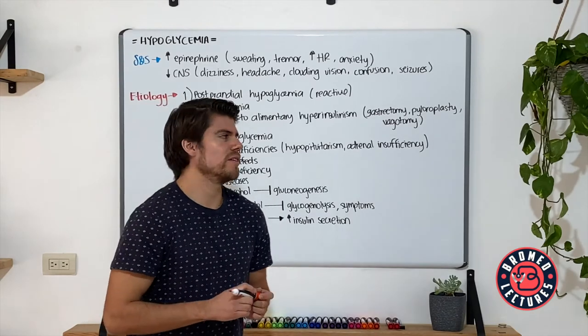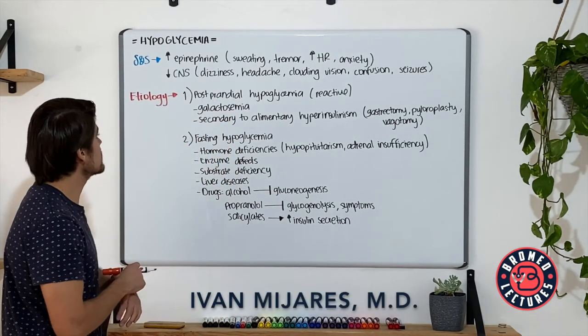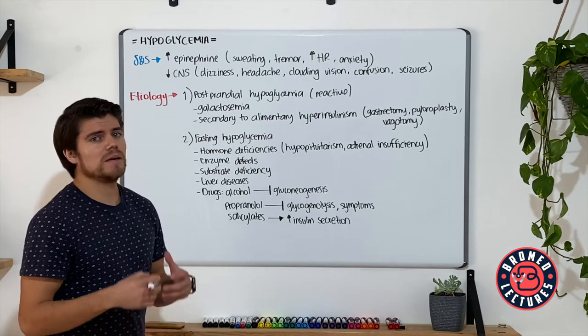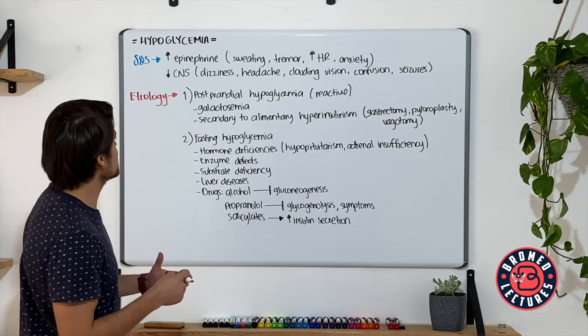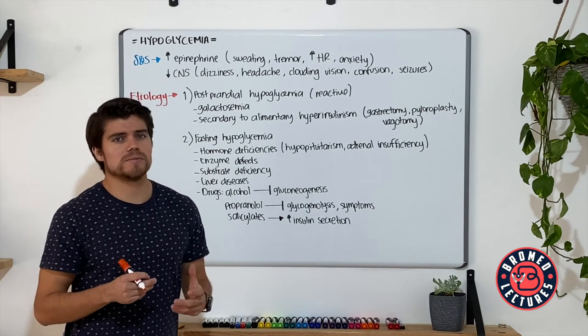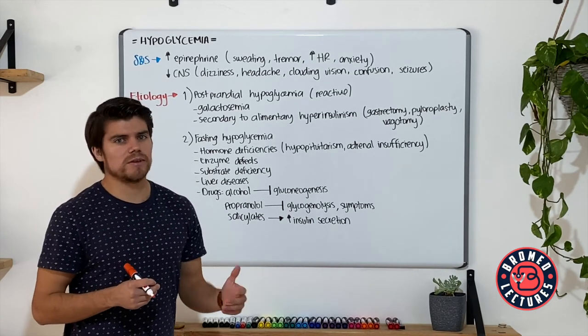Let's first begin with the signs and symptoms for these patients. Remember that several people may not develop hypoglycemic signs and symptoms until they reach levels as low as 20 milligrams per deciliter to 30 milligrams per deciliter.